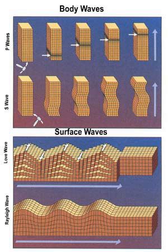Body waves travel through the interior of the Earth along paths controlled by the material properties in terms of density and modulus. The density and modulus, in turn, vary according to temperature, composition, and material phase. This effect resembles the refraction of light waves. Two types of particle motion result in two types of body waves: primary and secondary waves.